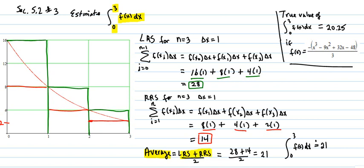And it's left Riemann's sum plus right Riemann's sum divided by 2, just the average. And you get this here. It's 42 over 2, which is 21. So the answer to this problem is that the integral from 0 to 3 of the function is approximately 21.